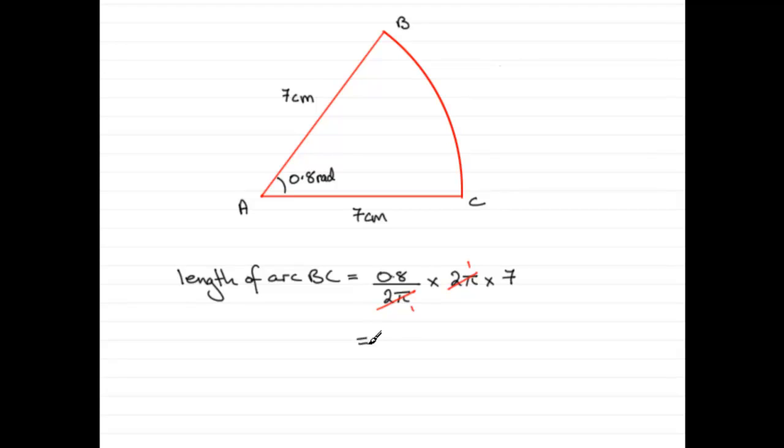And most of you might remember that formula actually. The length of the arc of a sector, as long as you've got the angle in radians, will always be the angle times the radius—theta r, as we often say.